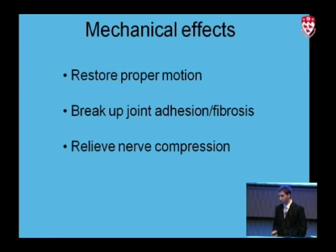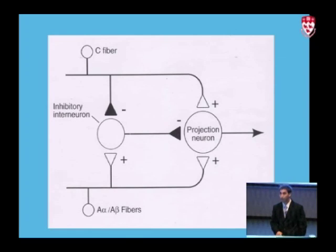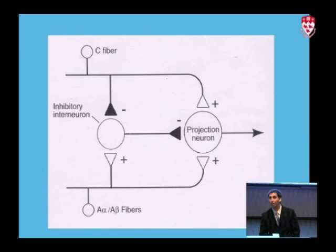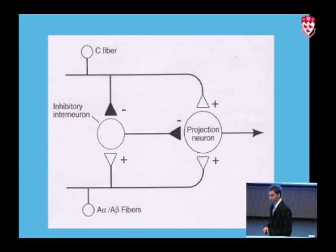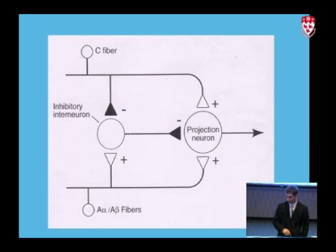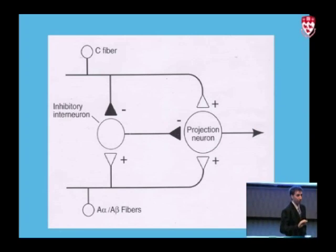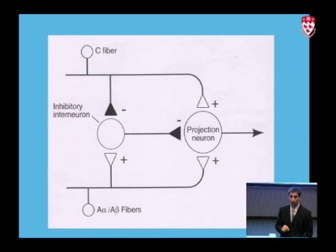If we now look at the neurological effects — the gate control theory, introduced in 1965 by Patrick Wall and McGill's own Ronald Melzack — the gate control theory actually serves a really good explanation for what happens neurologically during a chiropractic adjustment.